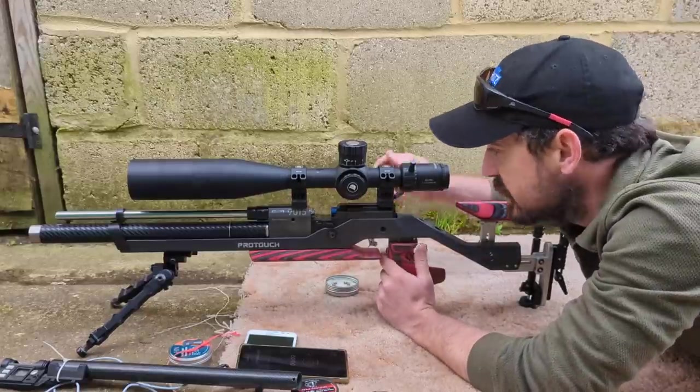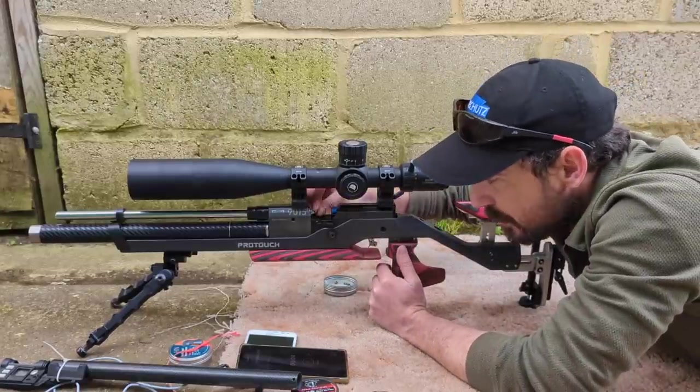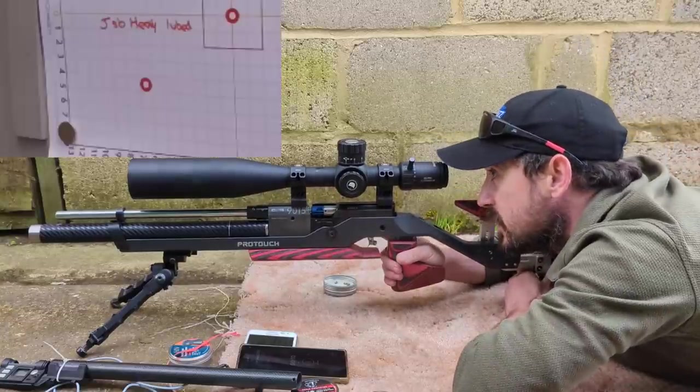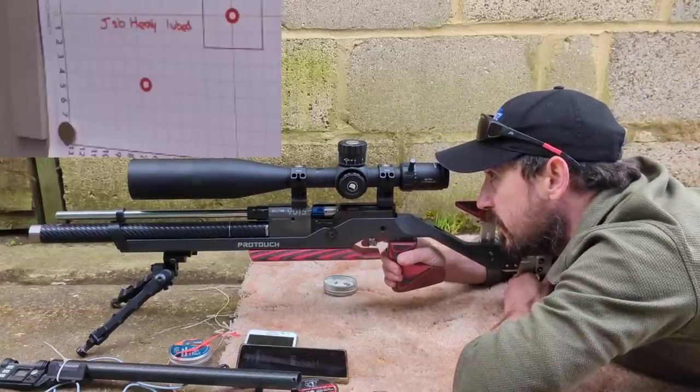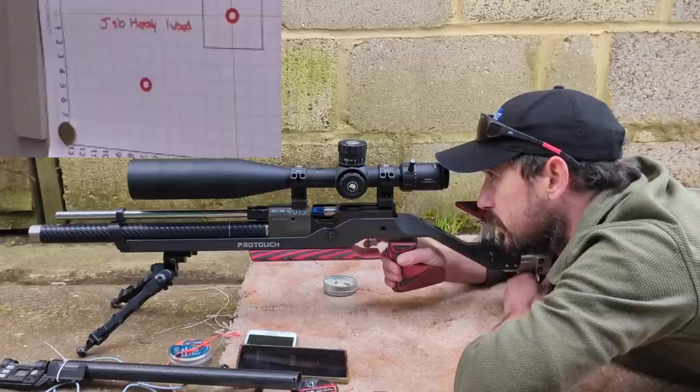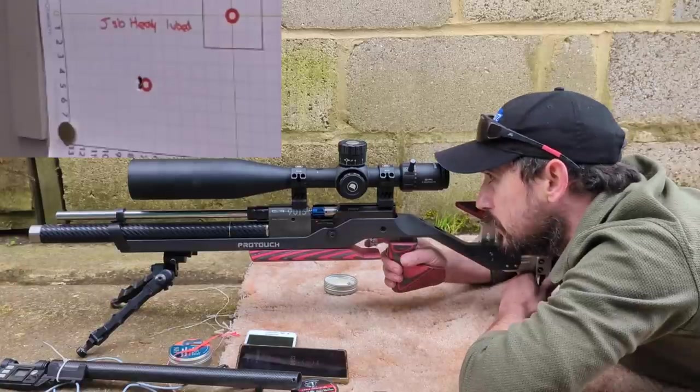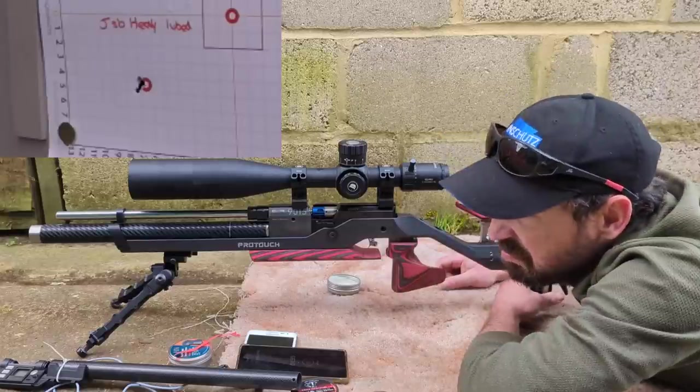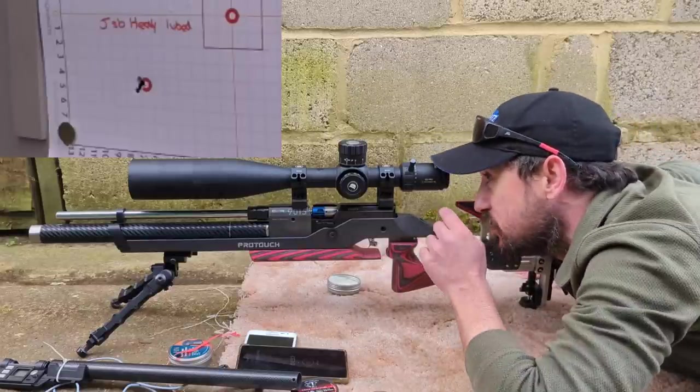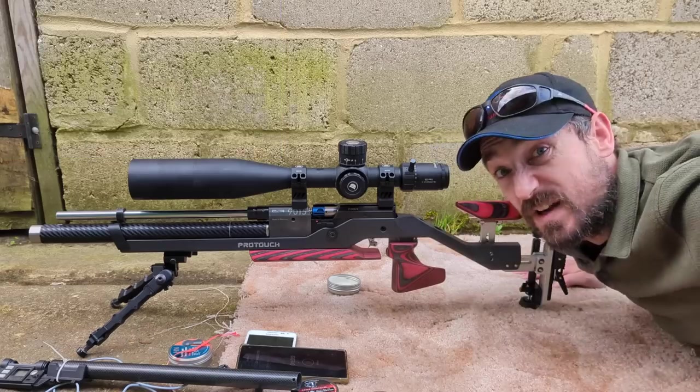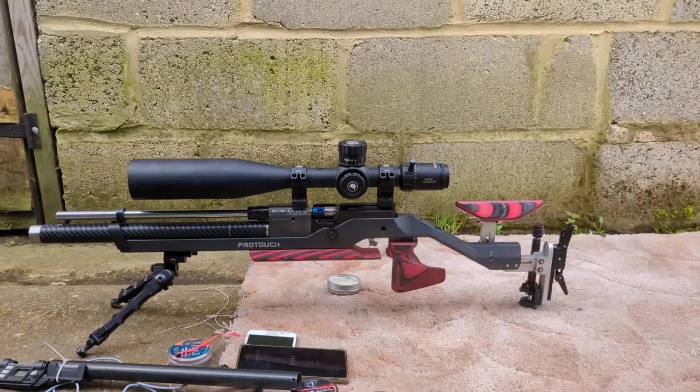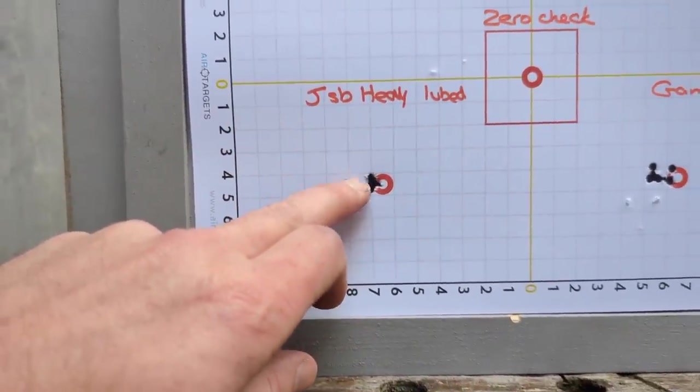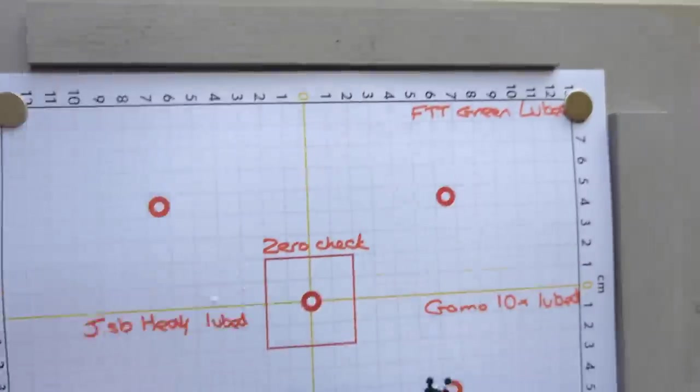All right, GoPro's on. We've got the five JSB heavies here that are lubed, just giving each one a little roll around in the foam in the tin. A bit sticky on the old fingers, but nothing too much to worry about. Right, bottom left card. Right, JSB heavies then, five of those. That looks pretty much the same size group. In fact, maybe even a little bit larger than the unlubed ones. What have we got there then? Just over a centimetre. These are centimetre squares on here, so I think that's actually marginally larger than the unlubed version.